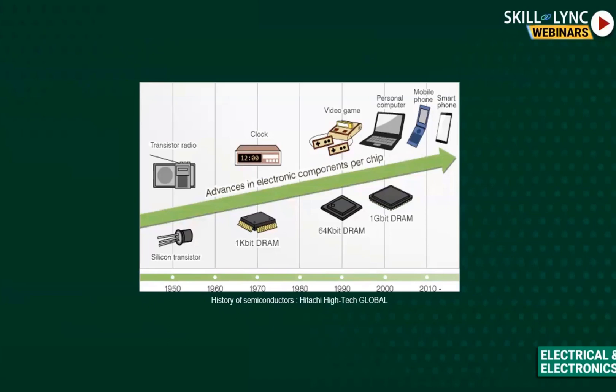The personal computers in those days were quite bulky and the processor speed was quite slow — it was the initial stage of personal computers in use. Since 2010, we have had mobile phones, smartphones, and now tablets and all kinds of latest technologies with very thin devices performing many functions. This is how the history of semiconductors has evolved so far, and more advancements are sure to come in the future.